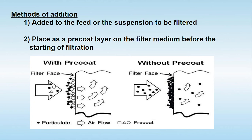The second method is to prepare a suspension of the filter aid in the same liquid that is to be filtered. Before starting filtration, this suspension is spread as a thin layer on the filter medium and allowed to settle and sometimes to dry. This forms what is called a pre-coat layer on the filter medium before filtration begins.